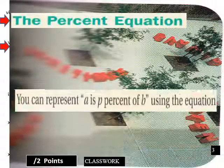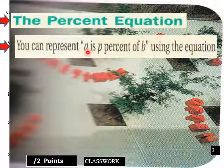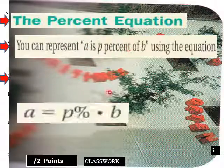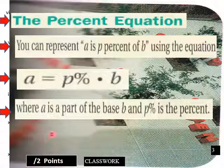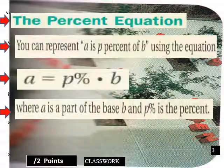Okay, so the percent equation. You can represent A as P percent of B using the equation A equals P percent times B, where A is part of the base B and P percent.